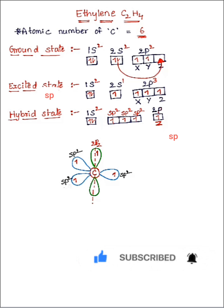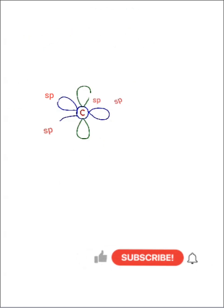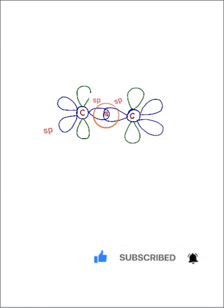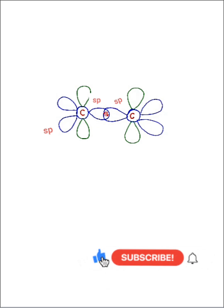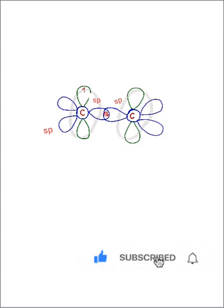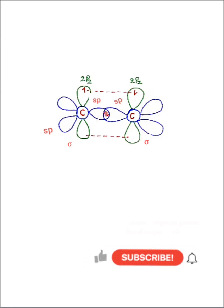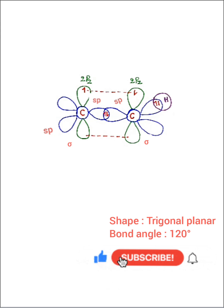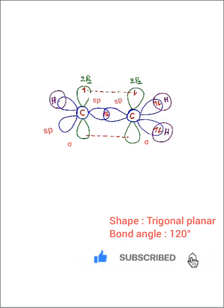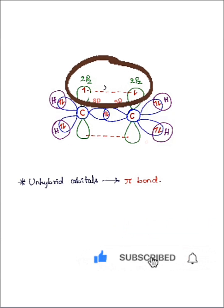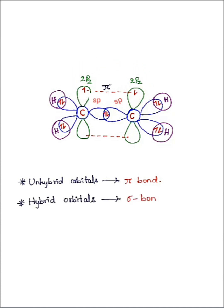Now we are going to see sp2 hybridization in the ethylene molecule. First, both carbon atoms form chemical bonds by sharing unpaired electrons in their sp2 orbitals. Second, they share unpaired electrons in the unhybridized 2pz orbitals, forming a bond between the two 2pz orbitals. Then each hydrogen atom shares one electron with an sp2 orbital of carbon. Unhybridized orbitals always form pi bonds, while hybrid orbitals always form sigma bonds.